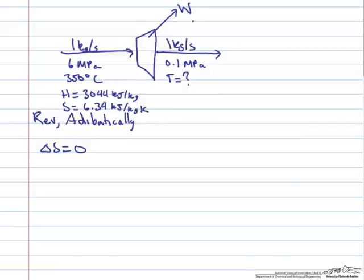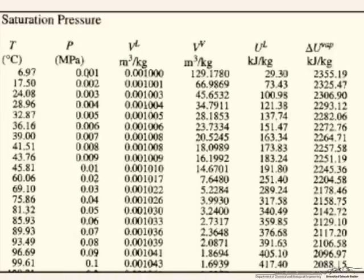Now we have to find somewhere in the steam tables where the entropy of steam at 0.1 MPa is equal to 6.34 kJ per kg Kelvin. Let's pull up the saturated steam tables. These are harder to read because there are more entries, but we have saturated conditions at different pressures.